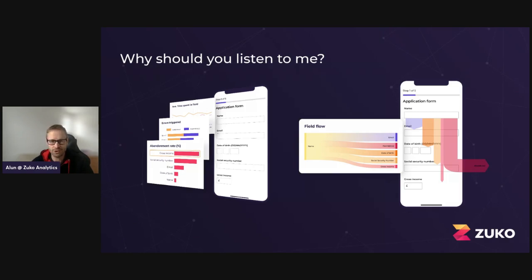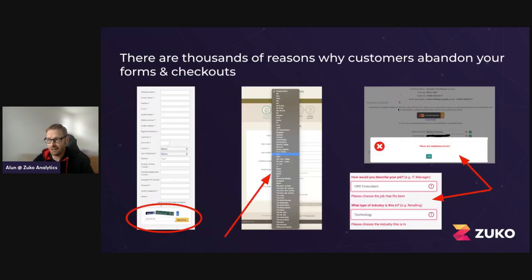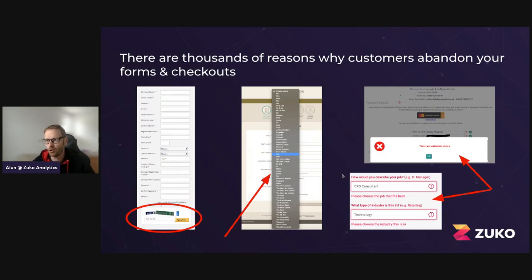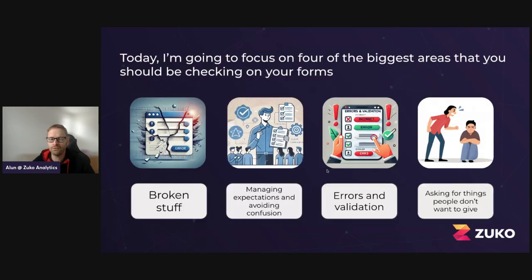Today it's all about what should you be looking at to fix your forms? Theoretically there are thousands of reasons why your customers are dropping out of your form or checkout, from terrible CAPTCHAs, big long drop-downs, horrible messaging, and hundreds more. But what I wanted to do today was really focus in on the core ones that we commonly see. These fall into four areas: broken stuff that doesn't work; user expectations and user confusion; errors, validation and what you're telling them; and finally what you're asking — are you asking for things in a strange way or things that people don't want to give you? We'll go through these areas one by one. It's going to be fairly brisk — this is a short video workshop.